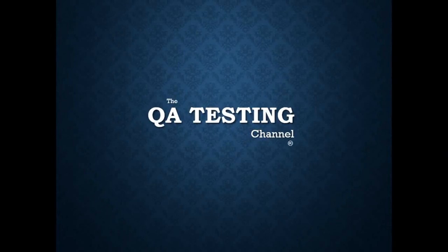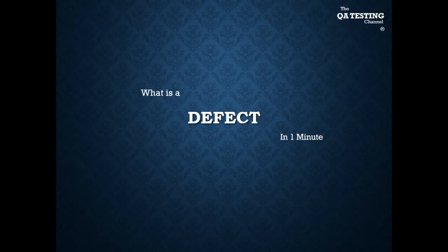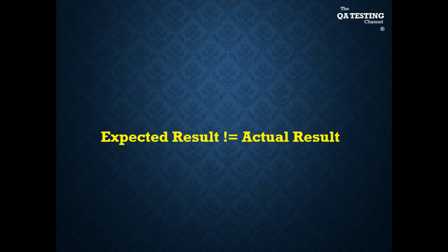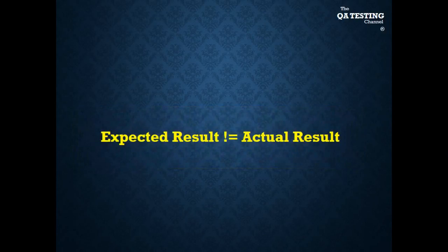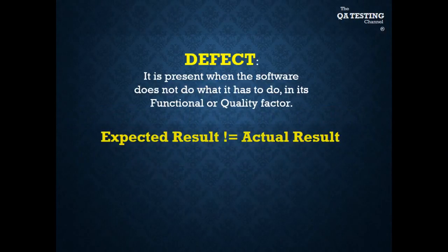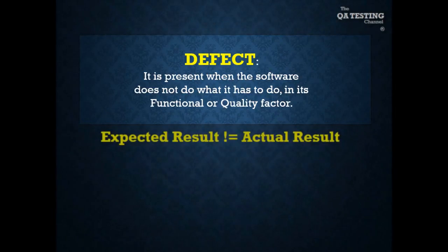Welcome to the QA testing channel, your software testing channel, sharing the IT knowledge. What is a defect in just one minute? A defect is when the expected result is different to the actual result. A defect is present when the software doesn't do what it has to do in its functional or quality factor.